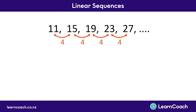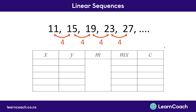Once we know that we have the same difference between all of our numbers, our next step is to draw up a table. This table has to have 5 different columns: an X column, a Y column, an M column — which we'll explain in a minute — MX, and C. The X column means you list the numbers 1 through to 5 every single time.